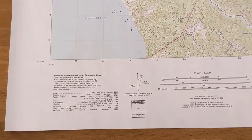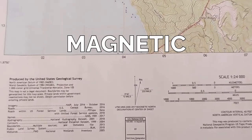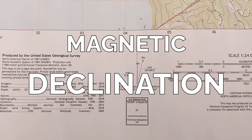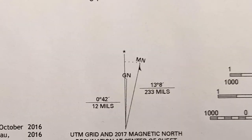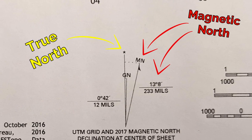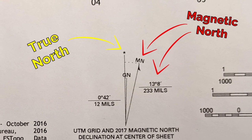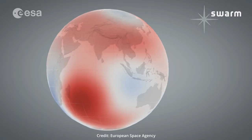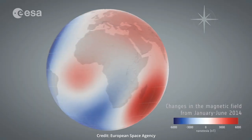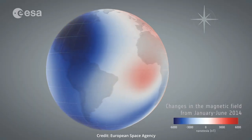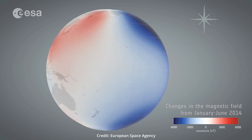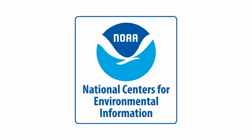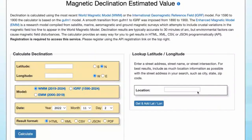This is why topographic maps give you a magnetic declination — it's the angle between Magnetic North and True North for the region covered by your map at a specific time. Since it's changing over time, it's best to look up the most recent declination reading online for the area before heading out. The National Centers for Environmental Information have a Magnetic Declination lookup available on their website.